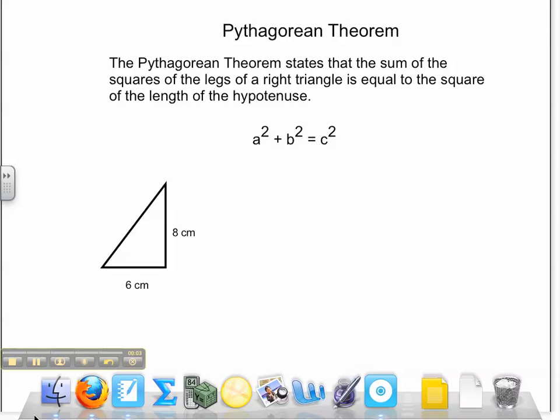Welcome to the tutorial on using the Pythagorean Theorem. The Pythagorean Theorem states that the sum of the squares of the legs of a right triangle is equal to the square of the length of the hypotenuse.